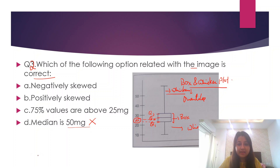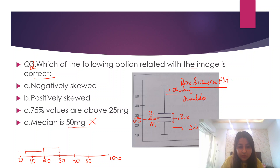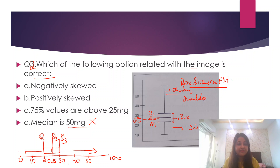To understand it better, let's draw it horizontally. The data set goes from 0 to 100, with markings at 10, 20, 30, 40, 50, and so on. The box lies between 20 and 30, with a bigger tail from 30 onwards. Q1 is at the lower end of the box, Q2 is in the middle, and Q3 is at the upper end. Drawing a line from Q2 confirms the median is at 25.